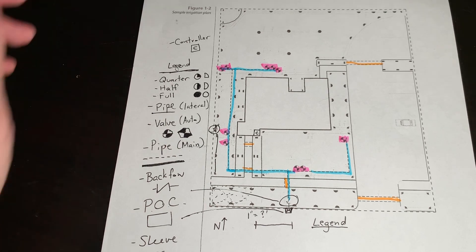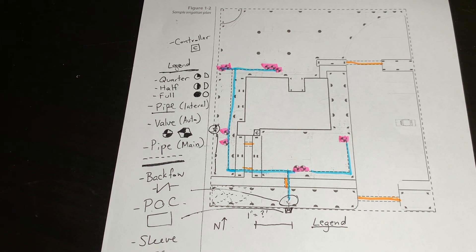So there you go. That is a sample irrigation plan and just a brief overview of some of the symbols and parts and what to look for when you are reading it.